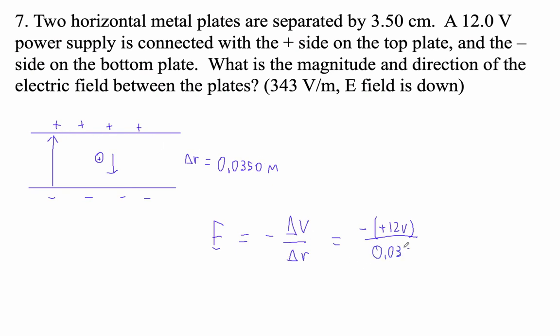So 12 divided by 0.035 is 342.8, but it's negative, so it would be negative 343 volts per meter, which is the same units by the way as newtons per coulomb.